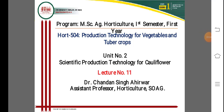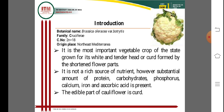Good morning, dear students. Today's lecture is on scientific production technology for cauliflower, Unit 2, Lecture 11, Hort 504 – Production Technology for Vegetable and Tuber Crops. The botanical name of cauliflower is Brassica oleracea, belonging to the Cruciferae family. The chromosome number is 2n = 18, and the origin of cauliflower is the northwest Mediterranean region.